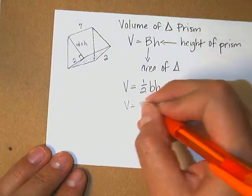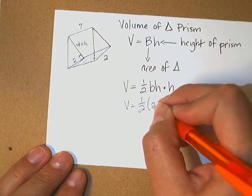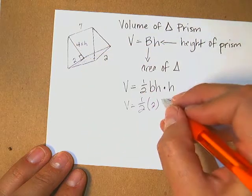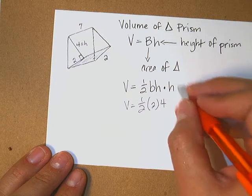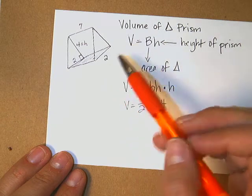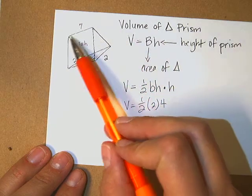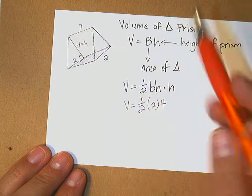Alright, let's fill this in. Half. My base is 2. My height of the triangle is 4. And then this other height is the height of my prism. So I look along my rectangles and I find 7 as my height.